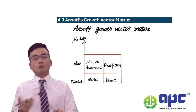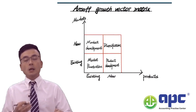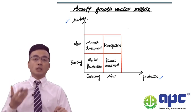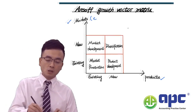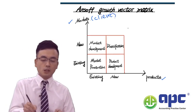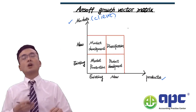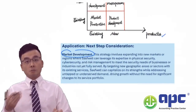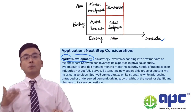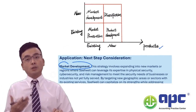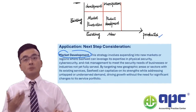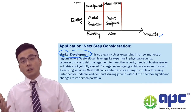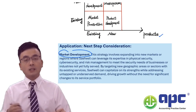According to the Ansoff Growth Vector Matrix, based on the x- and y-axes of new or existing products and existing markets, I would say the main focus for the Safeway company is on market development — developing the market, in other words increasing the client base. We can sell our services to a range of other clients to expand market share.